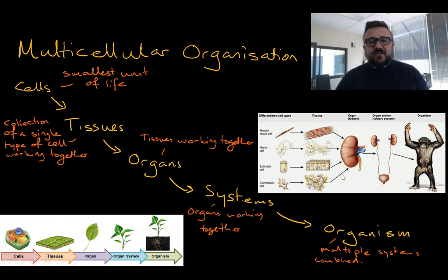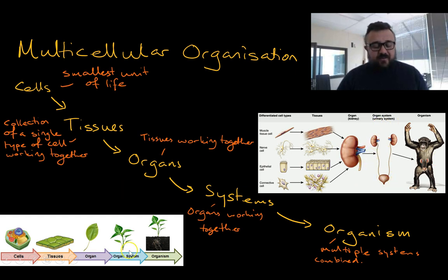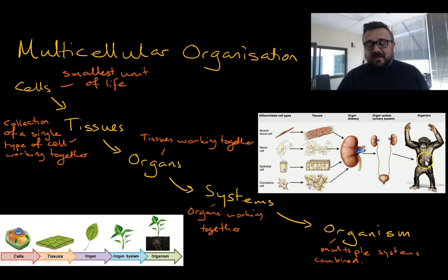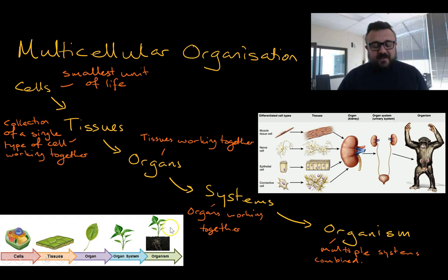The kidney is different tissues working together to do a job. That organ is then organized into systems. Over here we have the organ being part of the urinary system, and over here we have the organ — the leaf — being part of the stem system, which is pretty much everything above the ground on a plant. Then we have the organism, which is multiple systems combined. In the chimpanzee, we'd have the urinary system, the circulatory system — that's the heart and stuff — and the nervous system, which is the brain, and so forth. In plants, we have the root system and the stem system, and some other stuff.